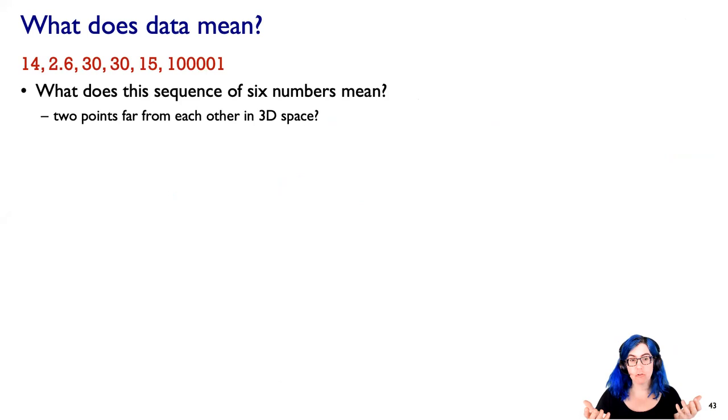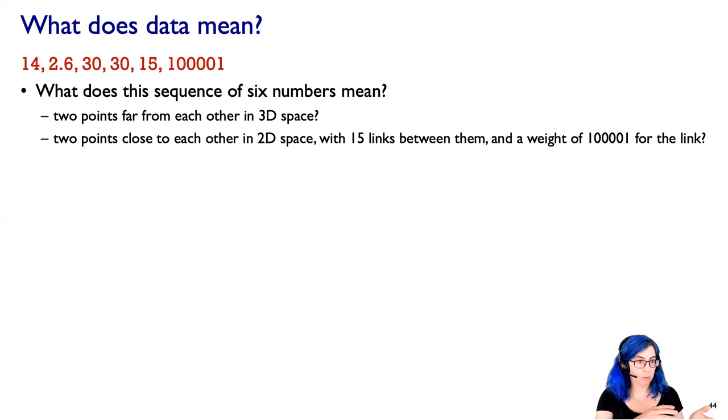What should we interpret this to be? Is it two points, two triplets far from each other in three-dimensional space, where we have three numbers for each? Is it two points close to each other in 2D space, 14, 2, 30, 30, with 15 links in between them, and that link has a weight of 100,001? Does it mean something else? If all we know are these six numbers we can't know.